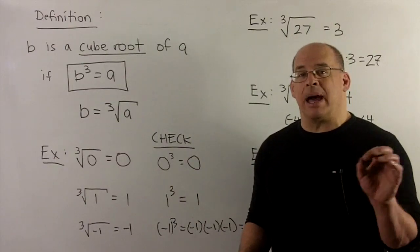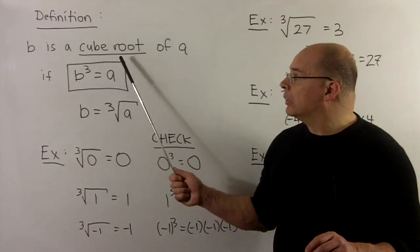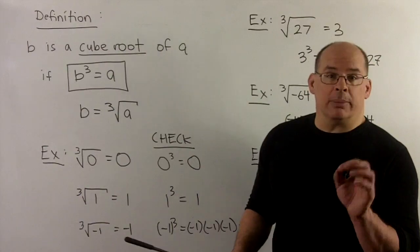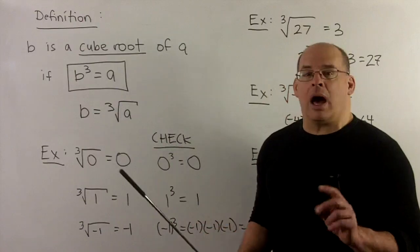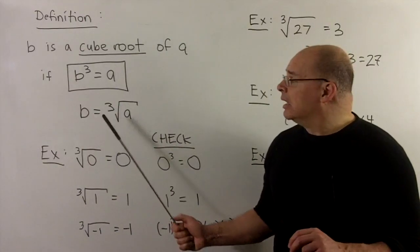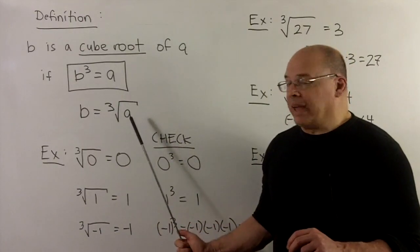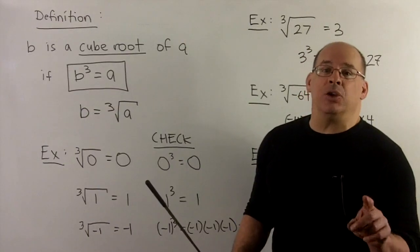we'll say b is a cube root of a if b to the third power is equal to a. So b times b times b. We use a similar notation. So I have the radical symbol, but now I want to put a 3 up and to the left, and that's going to be the cube root of a. Note here, I just say the cube root.